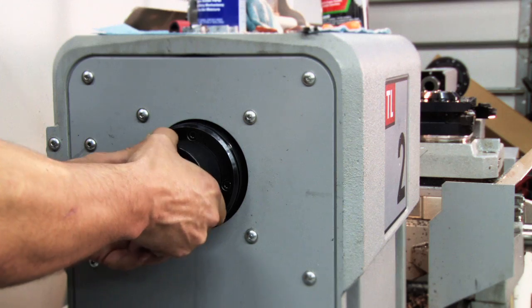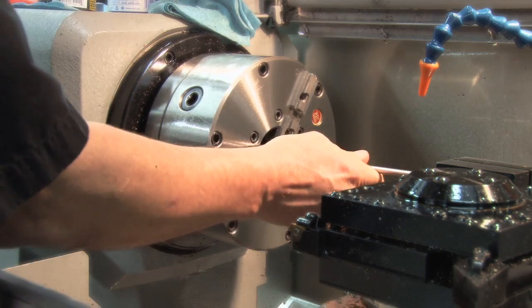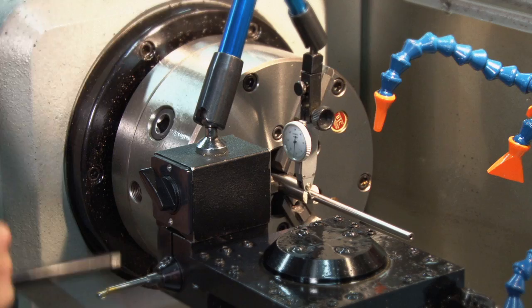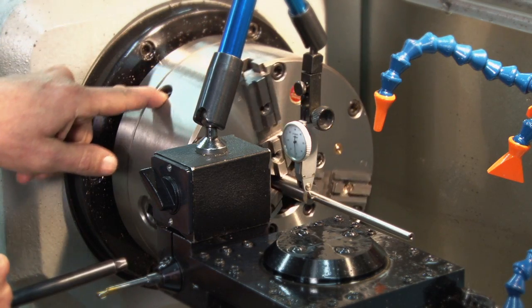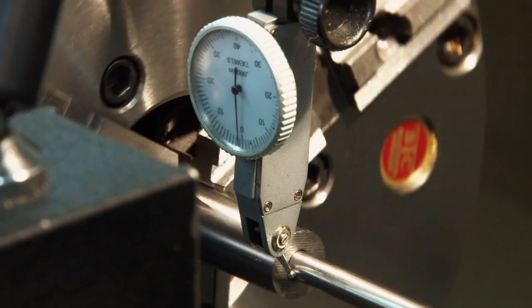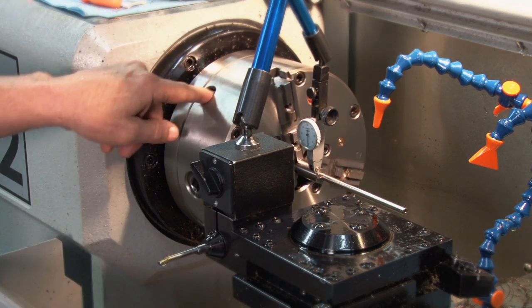As in all barrel fitting operations, the most important step in cutting the muzzle crown is setting up the bore on center. A crown that is square to the bore will allow the bullet to release consistently, so special tooling and measuring devices are utilized to fixture the barrel precisely.